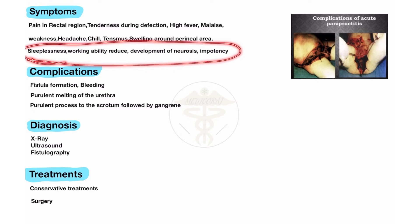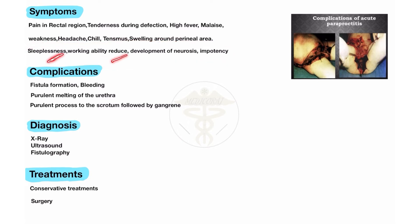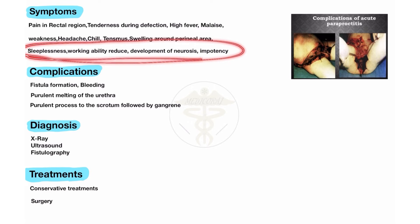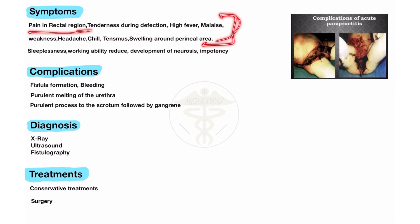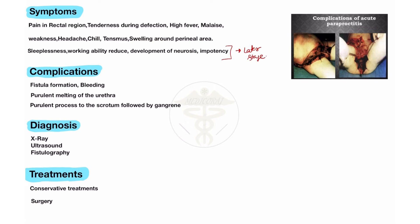Also swelling around the perineal area is a characteristic feature of Paraproctitis. In later stages, complications include sleeplessness, reduced working ability, development of neurosis, and impotency. In early stages you will see rectal pain, sometimes bleeding, malaise, weakness, headache, chills, tenesmus, and swelling around the perineal region.